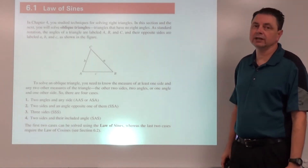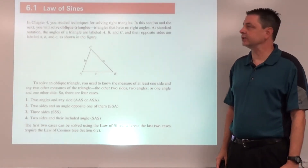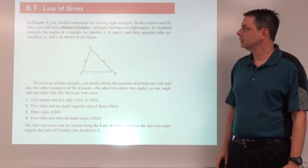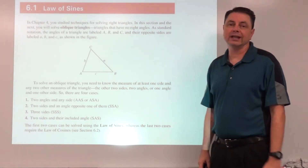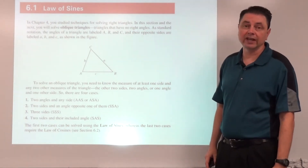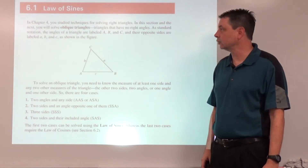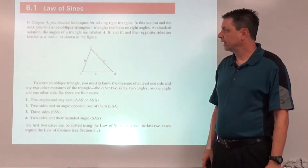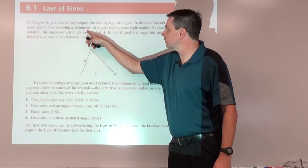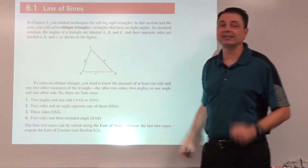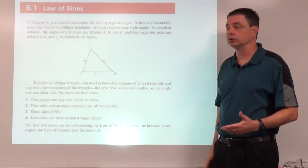Welcome to Hartman Math. Today we're going to take a look at the law of sines. Back in chapter four we were looking at how to solve a right triangle — meaning finding the missing sides and angles — and we're going to do the same thing here with oblique triangles, meaning it's not a right triangle, so it might be acute or it might be obtuse.